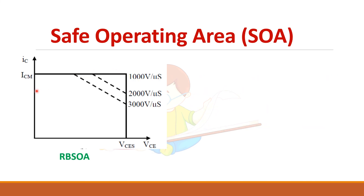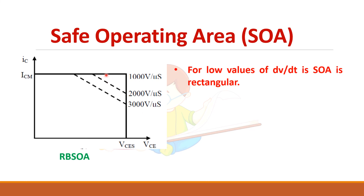The reverse bias safe operating area is defined by dv/dt limits. For a low dv/dt value you have a larger safe area, but as the dv/dt increases, the safe operating area reduces.